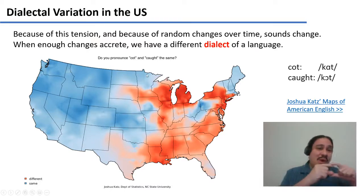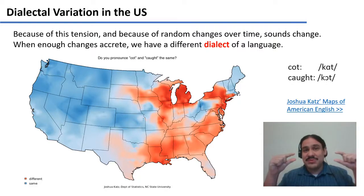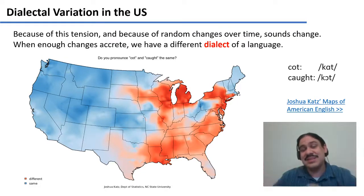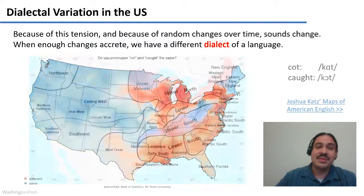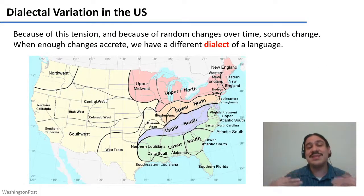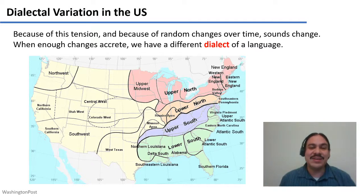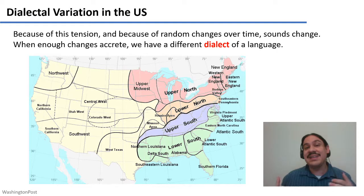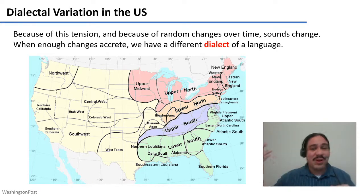This is just one difference — a pattern where two vowels become distinct — which eventually spreads across the entire language. When you accumulate enough changes, you get areas that sound different from one another, that in effect have different dialects. For example, someone sounding like they're from Boston, or from the South, or from California, and so forth.